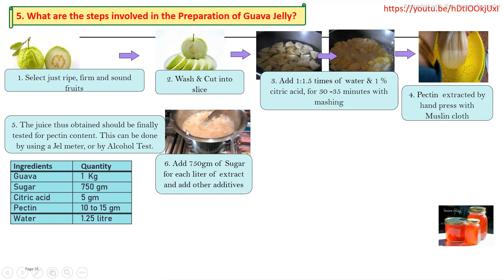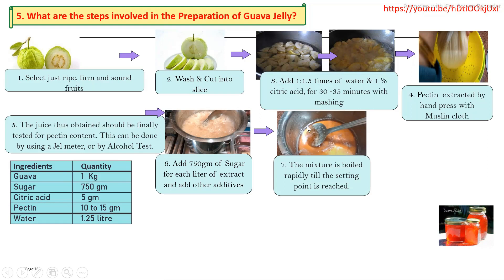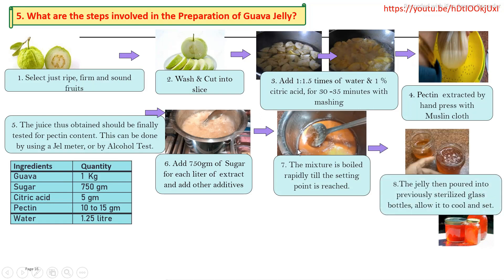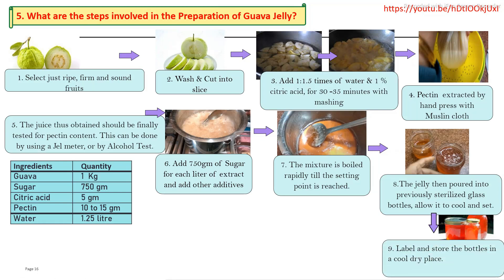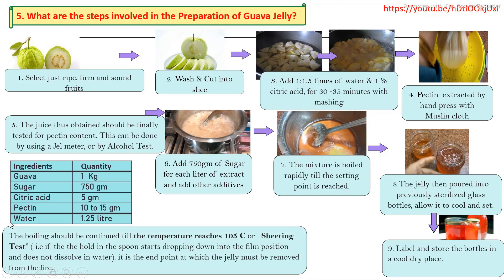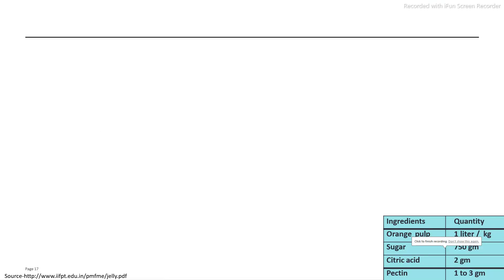After extraction, sugar is added and cooking starts. Once the final Brix is reached, pectin is added. Judging the endpoint during cooking is very important. After endpoint determination, other additives are added, followed by filling, packaging, labeling, and secondary packaging. Endpoint is judged by thermometer, Brix meter, or drop test.